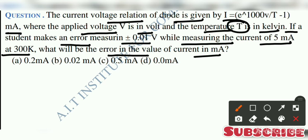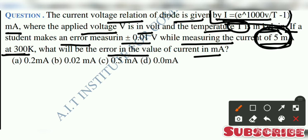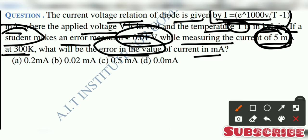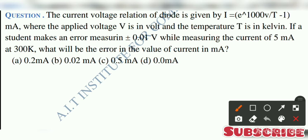So, milliampere is the current, so you can measure that. This is the error — that is the value of current in milliampere. The error in current will be the current in milliampere. Let's do this.